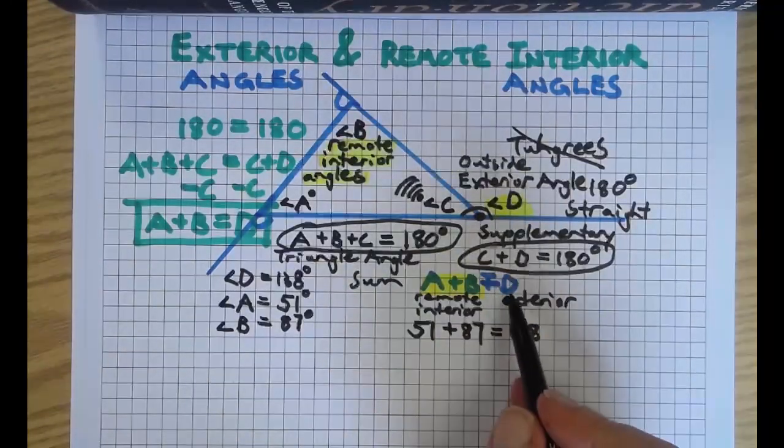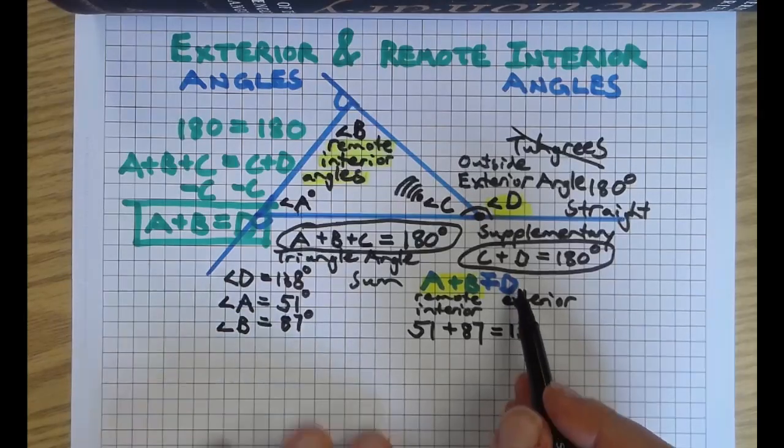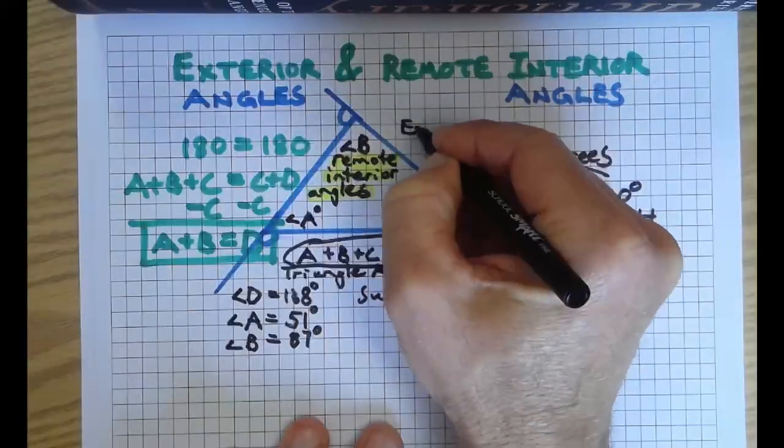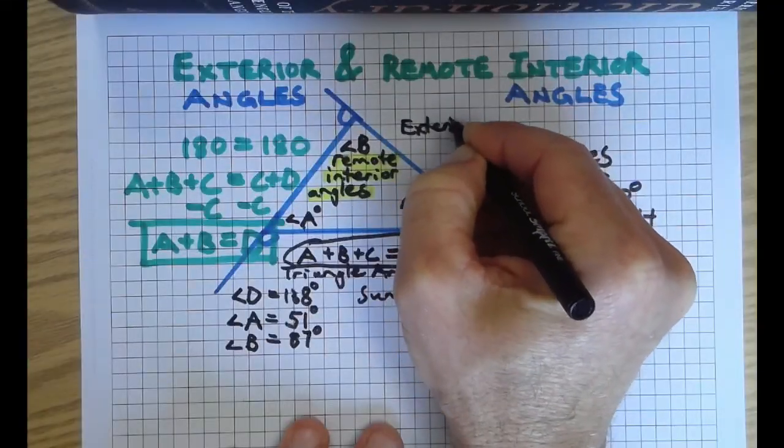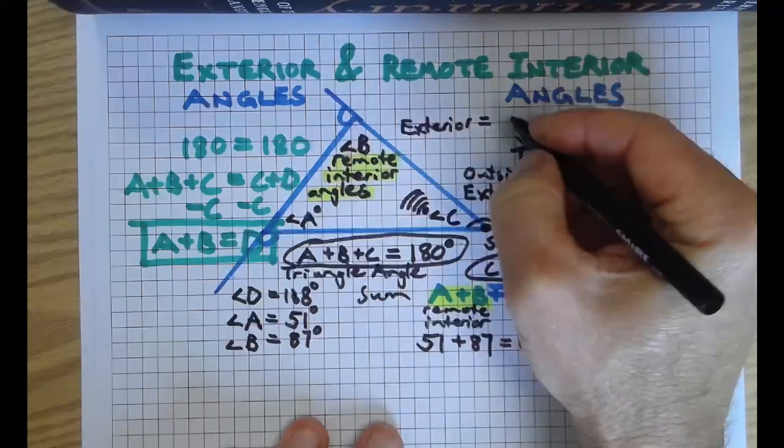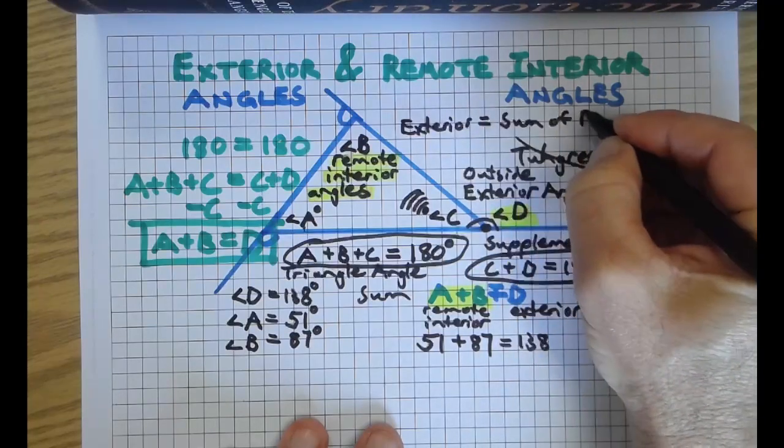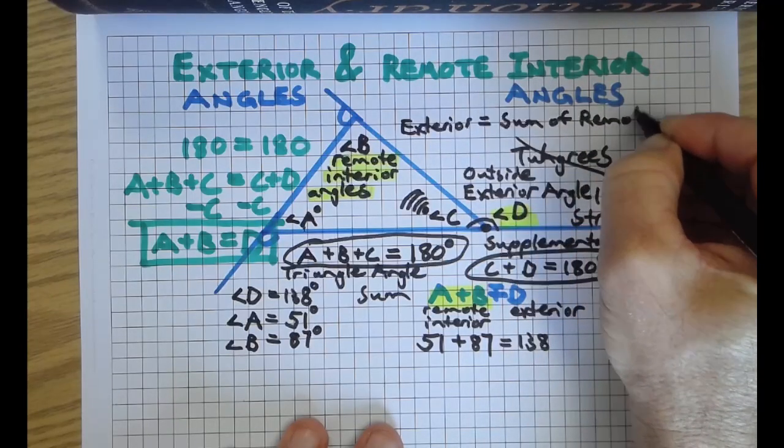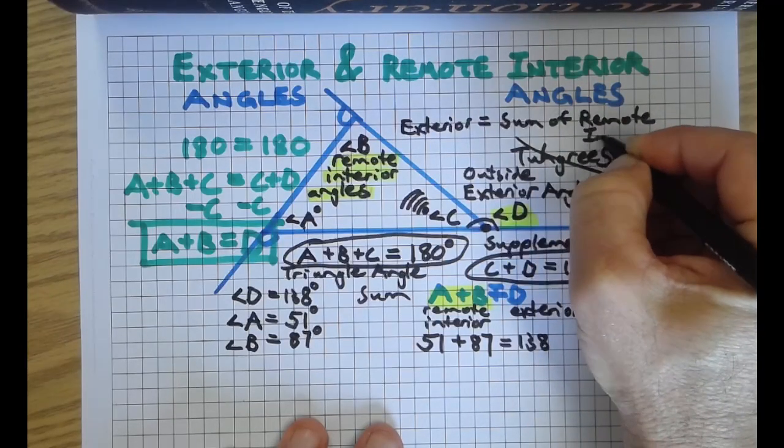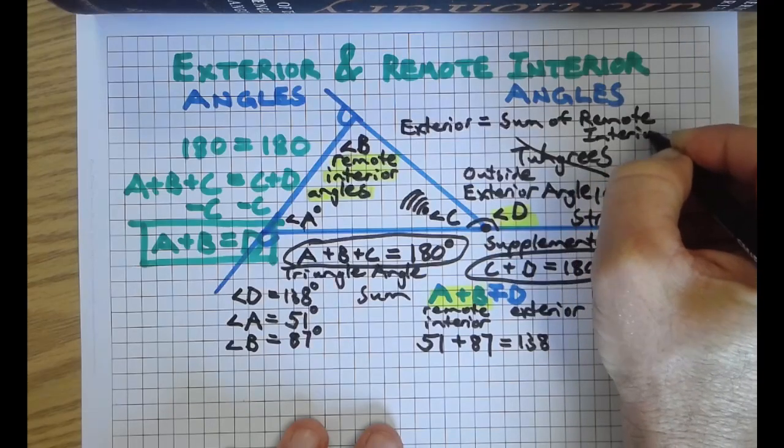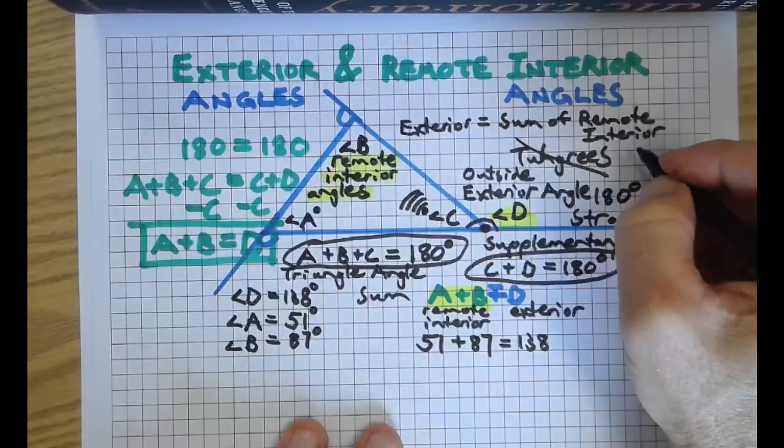We can always say that the exterior angle equals the sum of the remote interior angles. And you know how to prove it now, and you can use that wisdom to solve many, many types of problems. And that's going to close it out for this video.